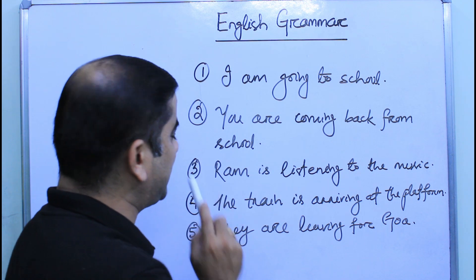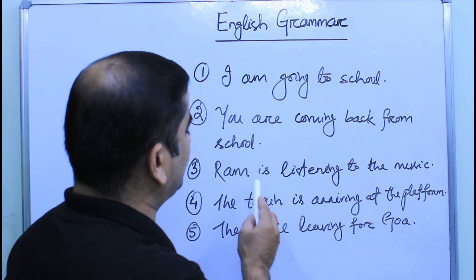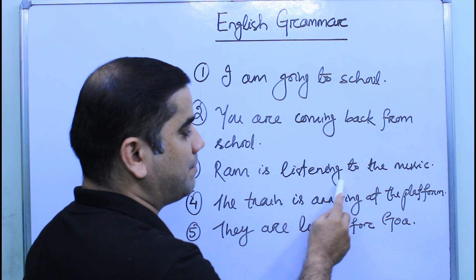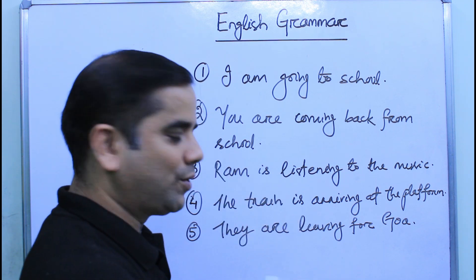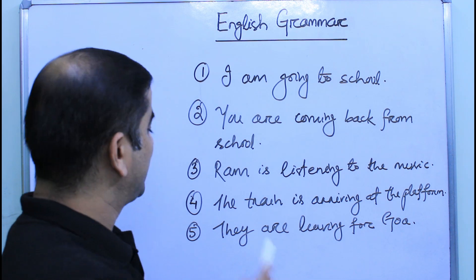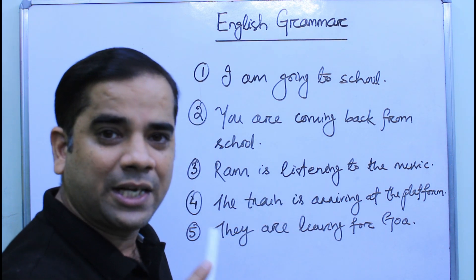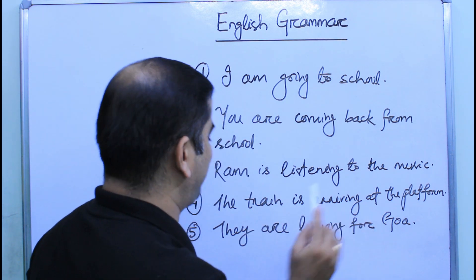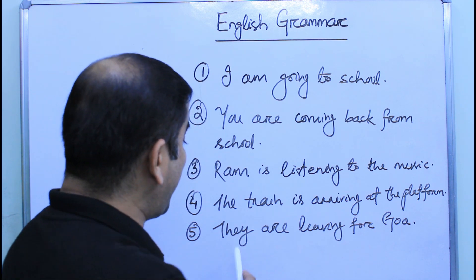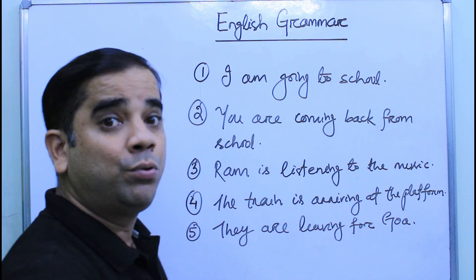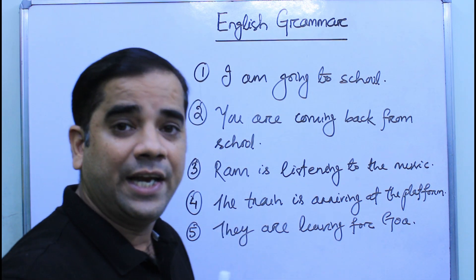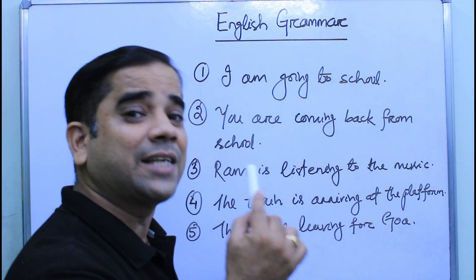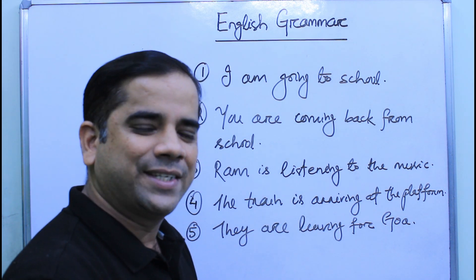'Ram is listening' — Ram is third person singular, so we use 'is.' 'Listen + ing' gives 'listening.' 'The train is arriving at the platform' — train is singular, so helping verb 'is' is used; 'arrive + ing' gives 'arriving.' 'They are leaving for Goa' — 'they' is plural, so we use 'are'; 'leave + ing' gives 'leaving.' I hope you understand.